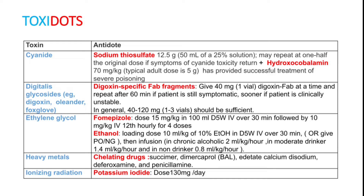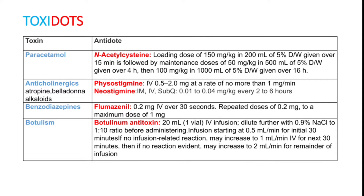Next toxin is paracetamol overdose. N-acetylcysteine is the drug of choice. Loading dose is 150 mg per kg body weight in 200 ml of dextrose saline given over 15 minutes, followed by a maintenance dose of 50 mg per kg in 500 ml of 5% dextrose over 4 hours, then 100 mg per kg in 1000 ml of 5% dextrose over 16 hours.